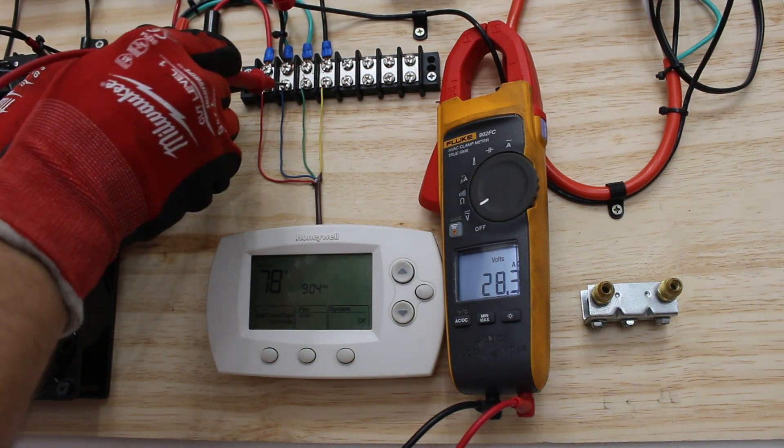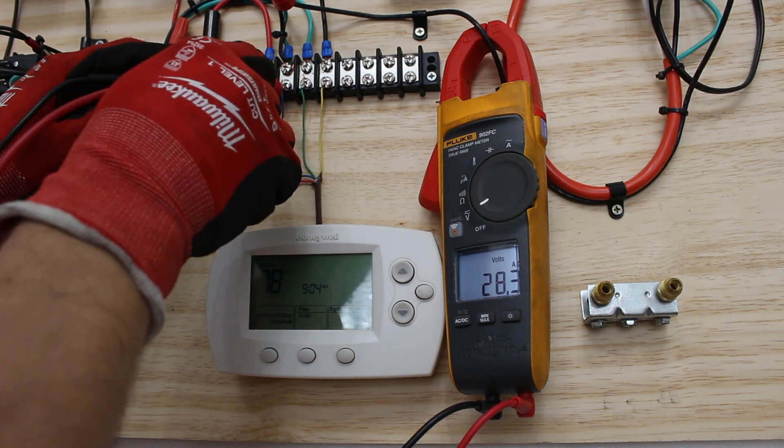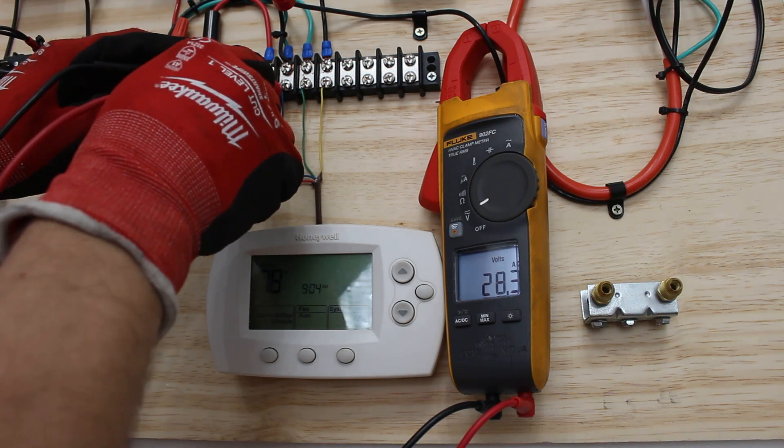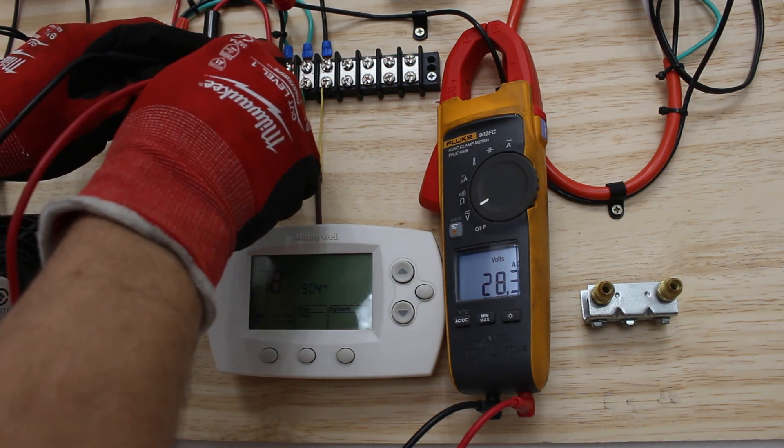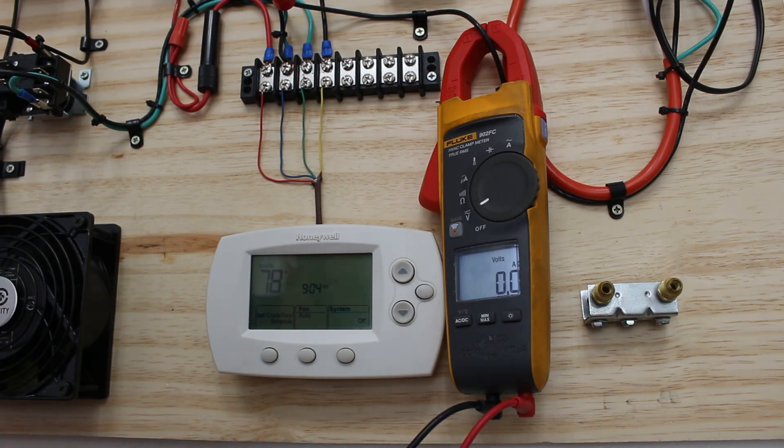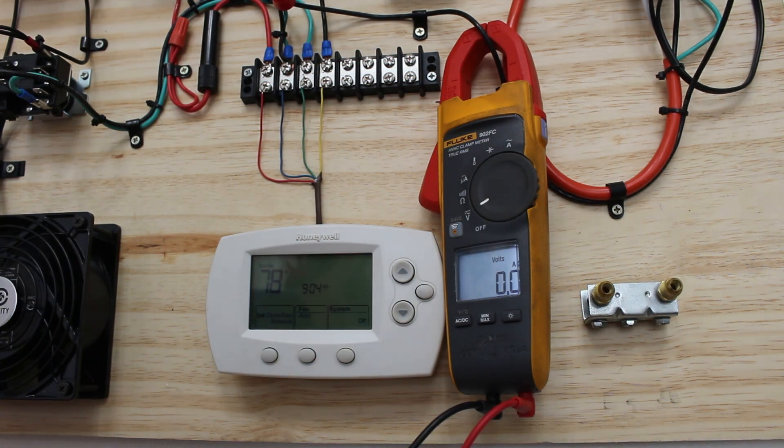Right there we have 28.3 volts. There is no such thing as a perfect world so you will not have exact numbers with voltages. So just know that if you have above 24 volts or 24 volts you have your voltage. If you do not have this voltage you can stop troubleshooting your thermostat and you should be aiming towards your transformer. I will leave a link in this video's description and you will see a pop-up on how to troubleshoot a transformer. So first things first, if we have 24 volts, if we do then we can proceed because now we know that we have control voltage.